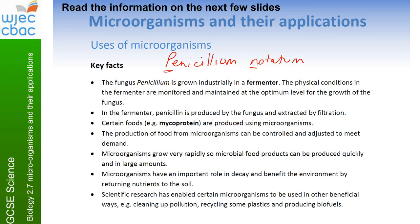Penicillium is often grown industrially in a fermenter, and the physical conditions in the fermenter are monitored. The things we control include temperature, pressure, pH, and oxygen levels — all of these are monitored. These days they're monitored using probes that are attached inside the fermenter.